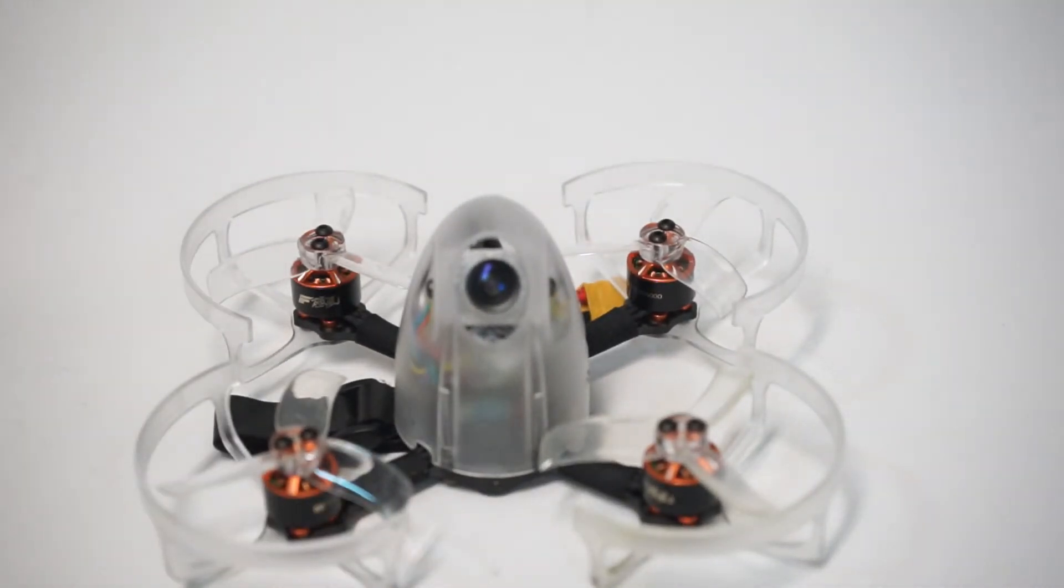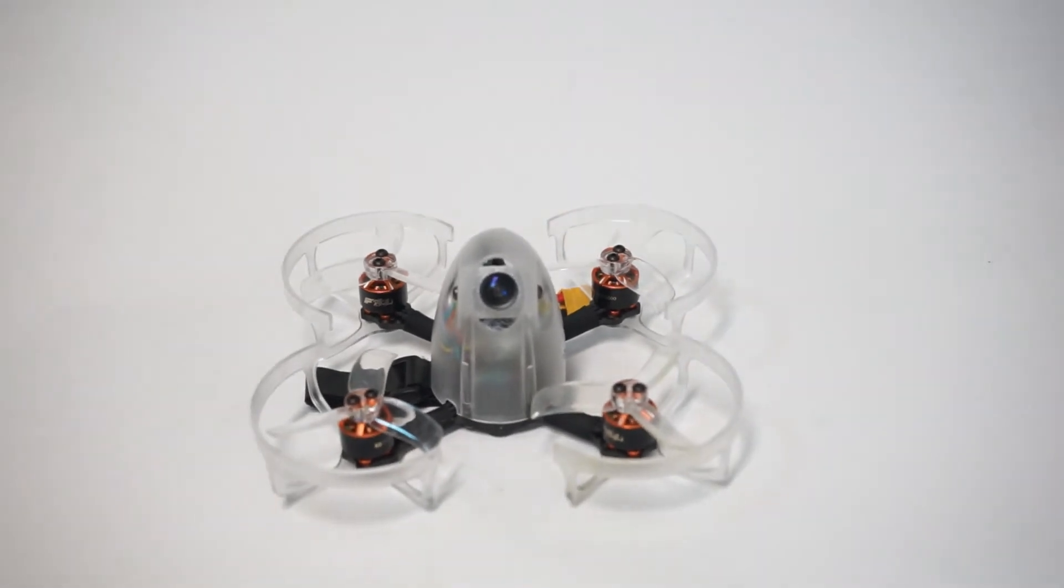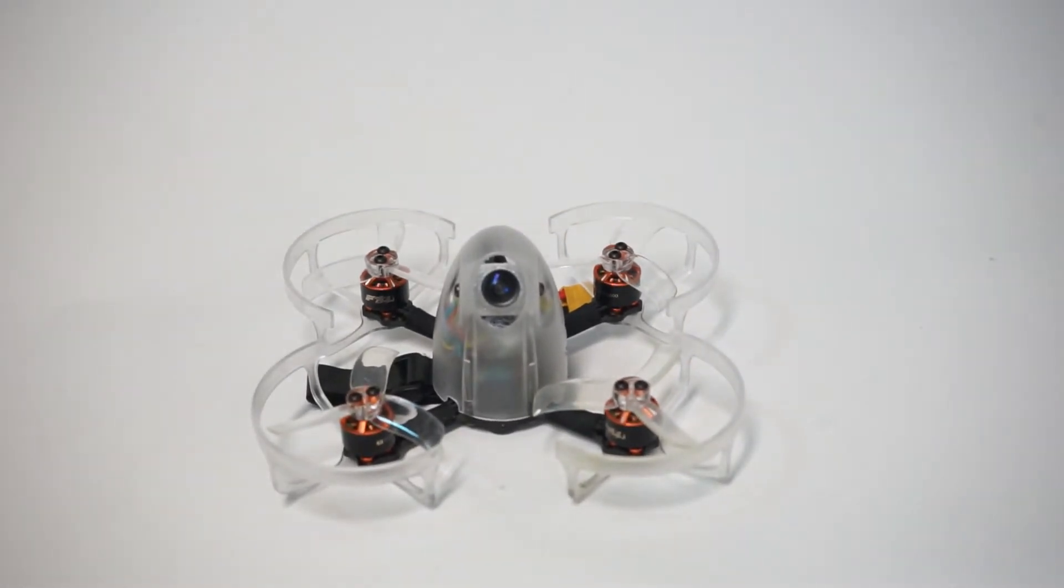that you're not going to have those issues where your camera just comes jostling loose like on a lot of other micro drones like the UR65 or Snapper 7 where if you sneeze on them the camera is just going to go flying and bouncing around inside those pods.